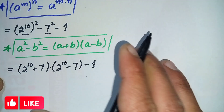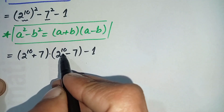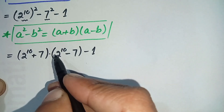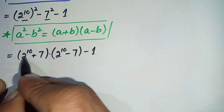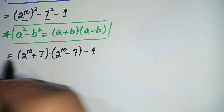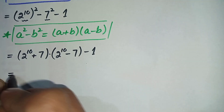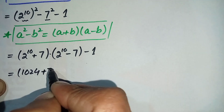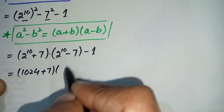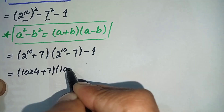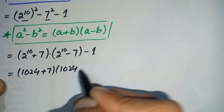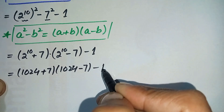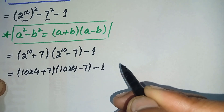Now we know that 2 raised to power 10 is the famous number 1024. So we replace 2 raised to power 10 with 1024, and this equation becomes (1024 plus 7) times (1024 minus 7) minus 1.